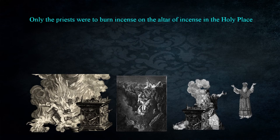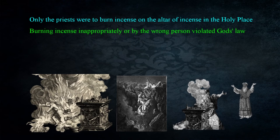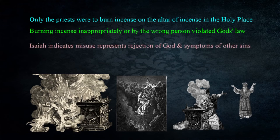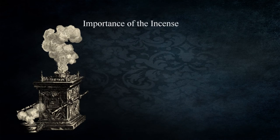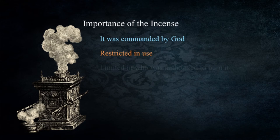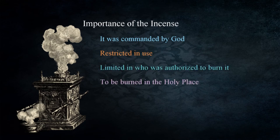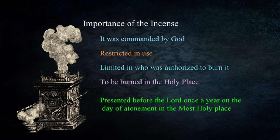Burning incense was to be done only by the priests and only on the altar of incense in the holy place. As we saw in the cases of Nadab and Abihu, Korah, Dathan, Abiram, and Uzziah, burning incense inappropriately or by the wrong person was a violation of God's law. From the passage in Isaiah we see that it represents rejection of God and is a symptom of other sins against the Lord. Incense in the ancient world was associated with the worship of idols, and in Israel and Judah indicated a shift toward idolatry and away from the Lord. We might not think of the incense and the procedures for using it to be important, but it was commanded by God, restricted in use, and limited in who was authorized to burn it — to be burned in the holy place daily and presented before the Lord once a year on the day of atonement.